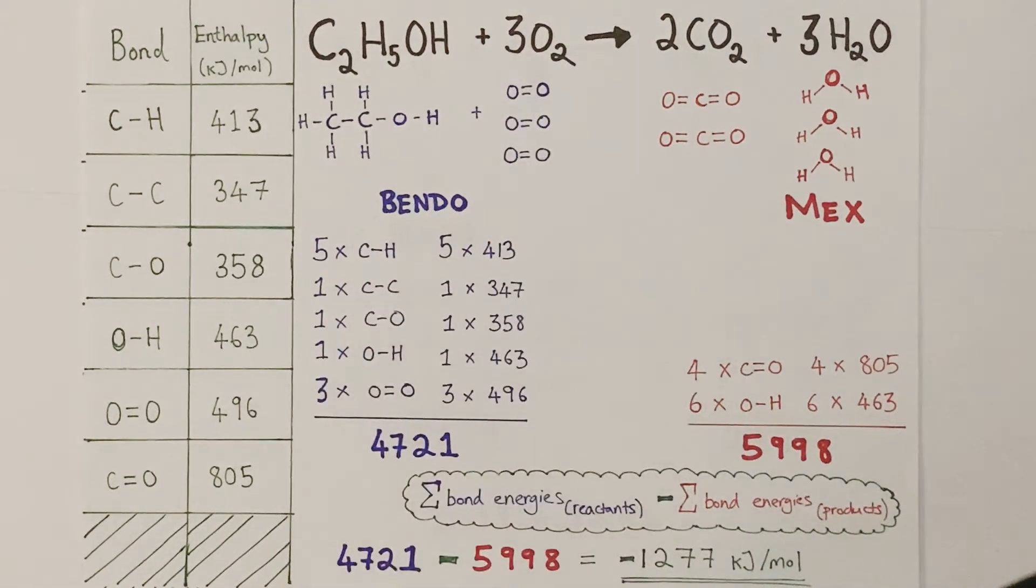This is where the final bond energy calculation comes into play. Applying the fact that BENDO, endothermic processes, is a positive enthalpy change, and MEX, exothermic processes, are a negative enthalpy change, I simply account for that in my calculations. So I do the sum of the bond energies of the reactants minus the sum of the bond energy of the products, i.e. the endothermic values minus the exothermic values. So it's essentially just reactant value minus product value. And here's my calculation shown there. And it gives me the overall enthalpy change for the reaction itself. As minus 1277 kJ per mole, this is a highly exothermic reaction, which makes sense because it's a combustion reaction.